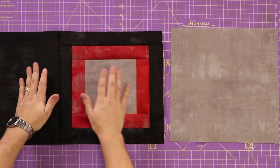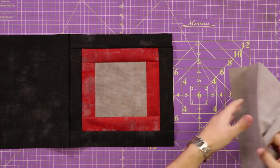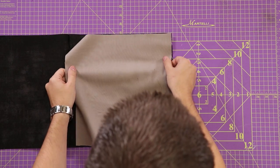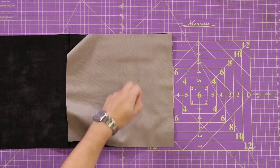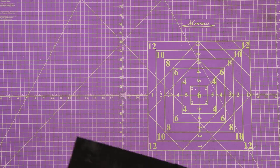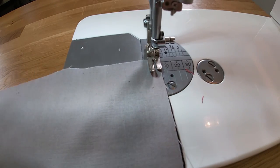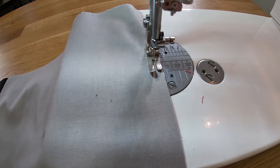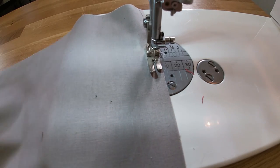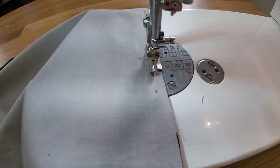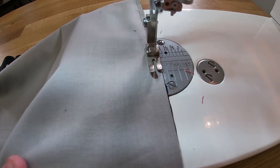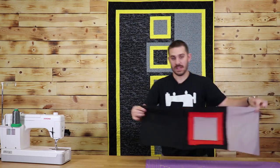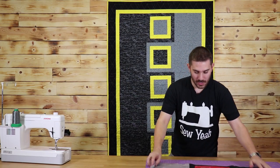So I've got my first piece sewn on. I'm going to sew my second piece on the other side and then I'm going to iron them both out. So that is one row.